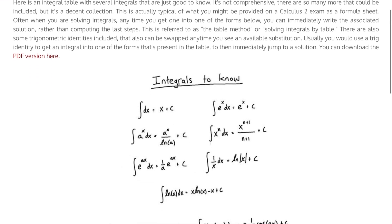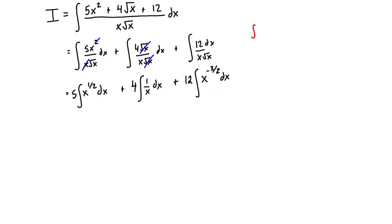We're looking at the integral of x^n dx and the integral of 1/x dx as our table entries. Let's copy these over onto our worksheet. The integral of x^n dx equals x^(n+1) over (n+1) plus C, and the integral of 1/x dx equals ln|x| plus C.